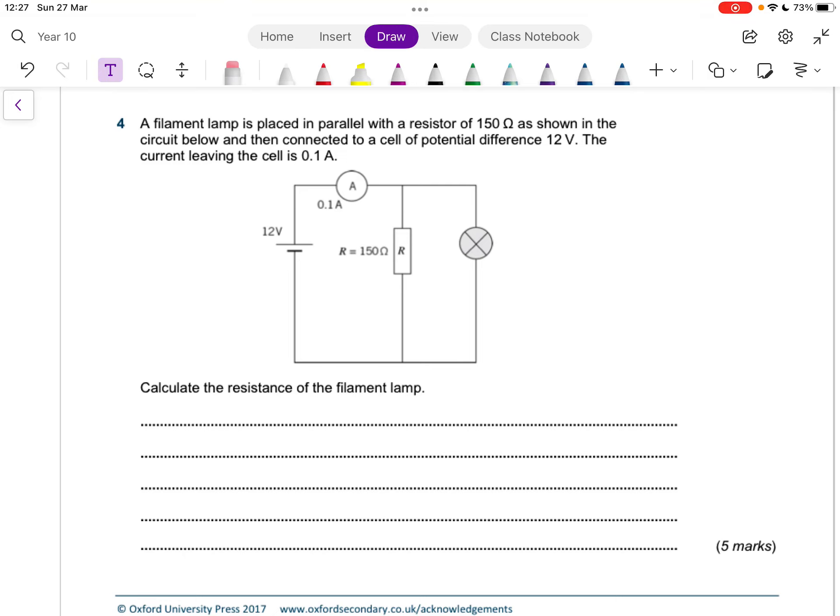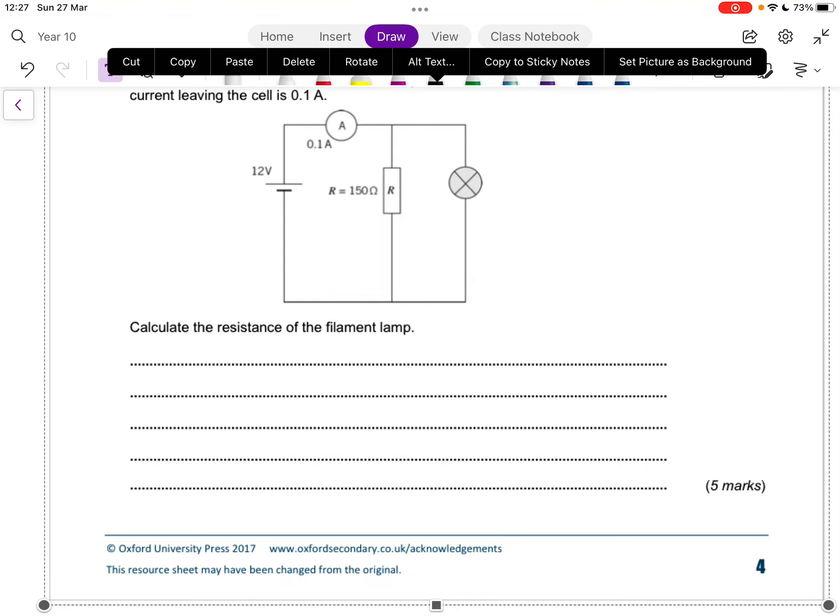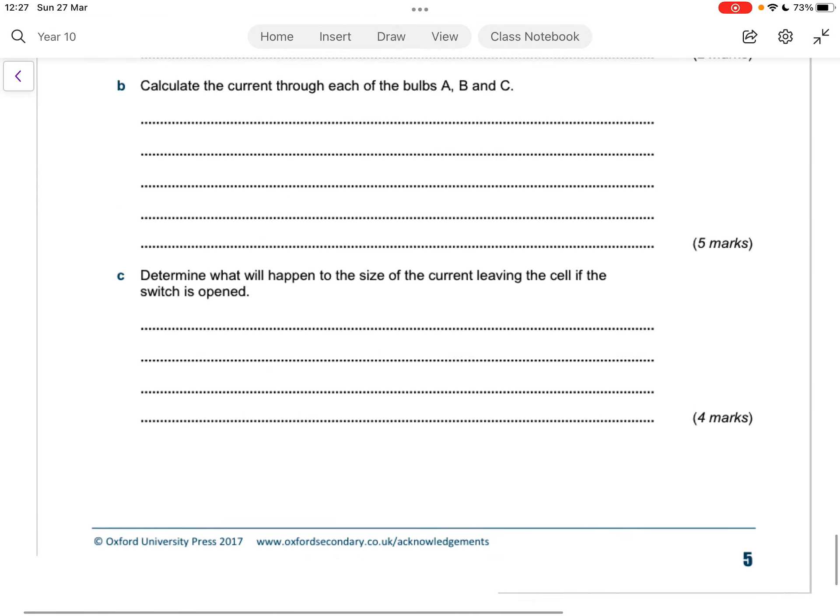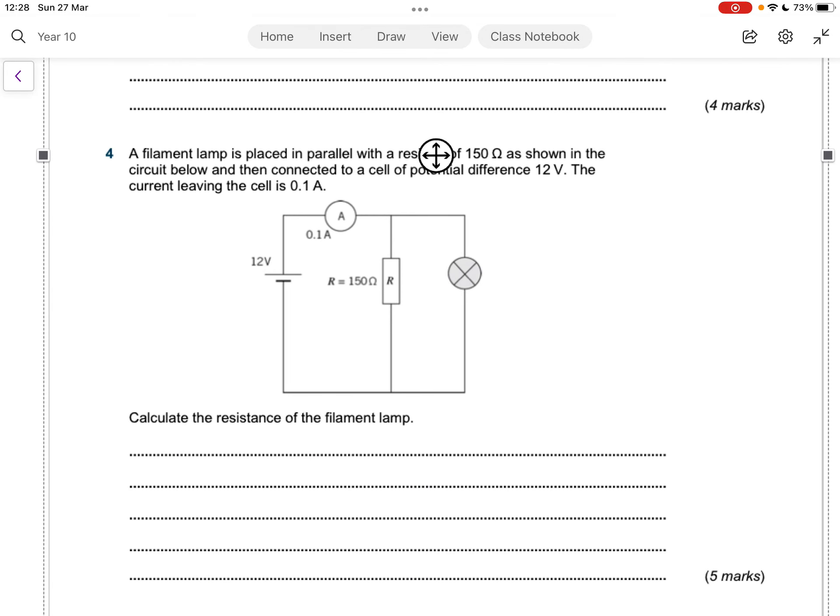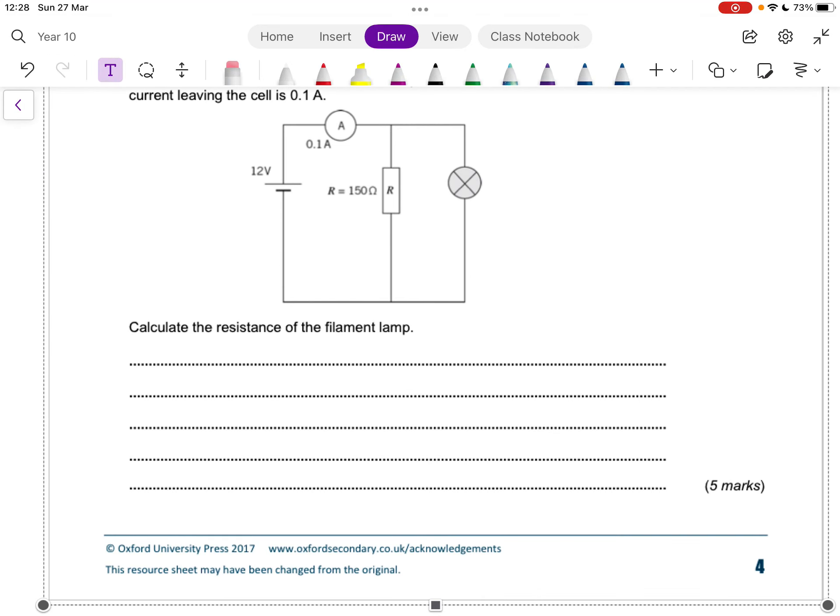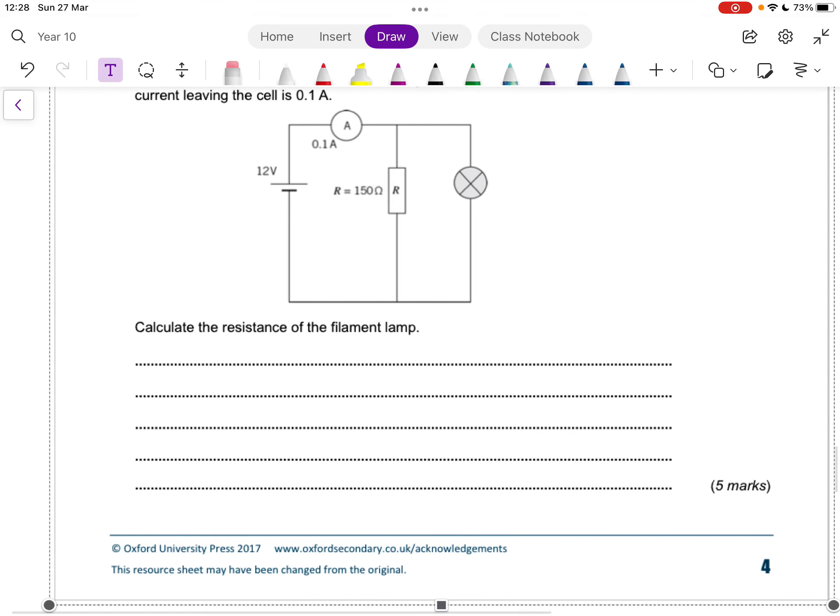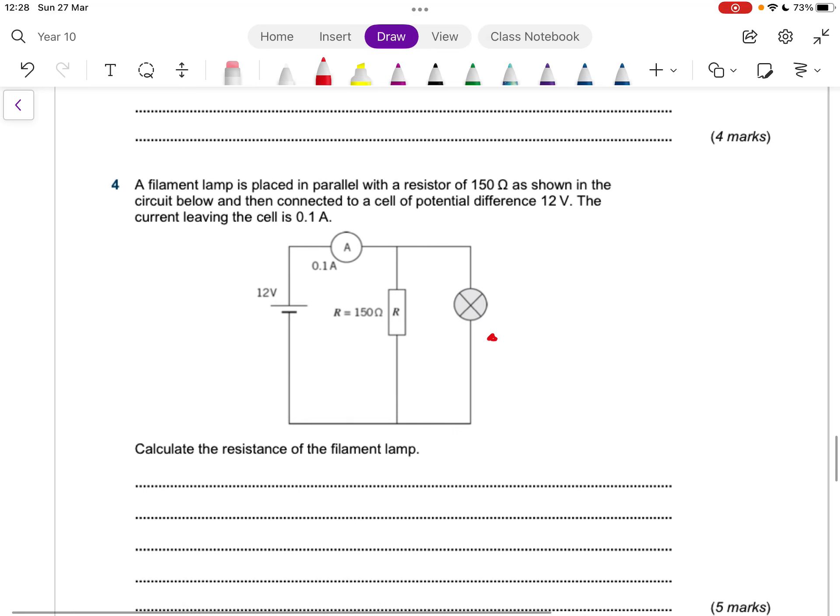So they tell you that you've got your filament light bulb that's in parallel. So we have the filament light bulb over here, which is in parallel with the 150 ohm resistor, right? And they tell you that the potential difference is 12 volts and we have a current of 0.1 A. Then they want the resistance of the filament light bulb.